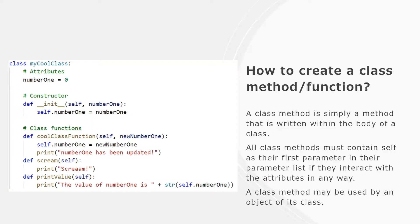To create a class method or function, it's the exact same way you would create a regular function, except it's placed within the class body. One small caveat: if you want the function to interact in any way with the attributes of the object, you must include self as the first parameter in the parameter list. This tells it that it's going to refer to the object itself and allows it access to the attributes. This only has to be used if the function uses the object's attributes, but I would recommend that self is always there just to be safe.